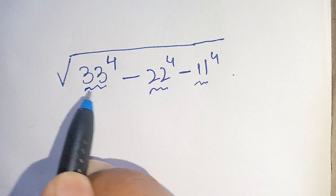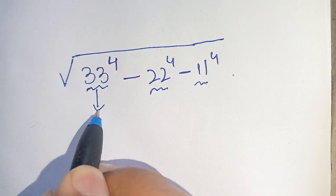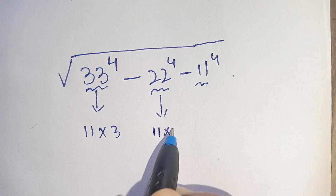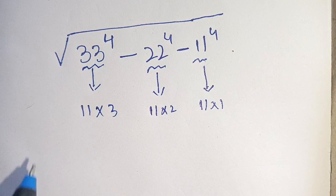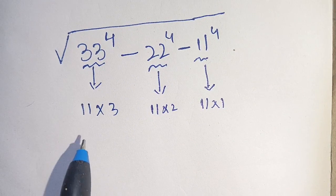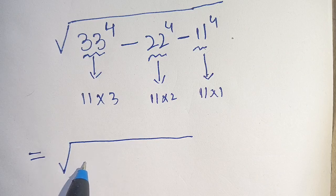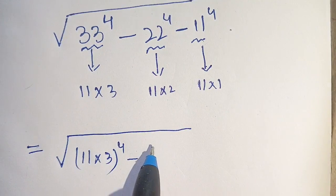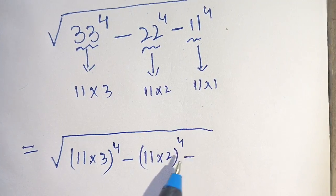We see that 33, 22, and 11 are all multiples of 11. So 33 can be written as 11 times 3, and 22 can be written as 11 times 2, and 11 can be written as 11 times 1. So our problem can be written as square root of (11×3)⁴ minus (11×2)⁴ minus (11×1)⁴.